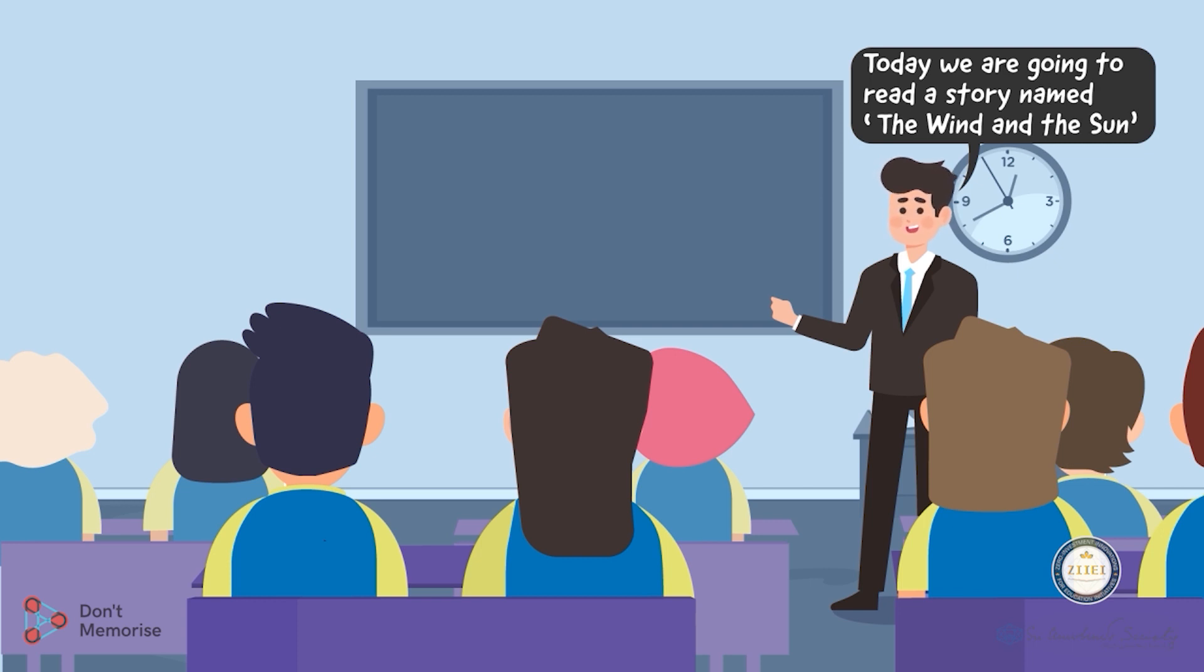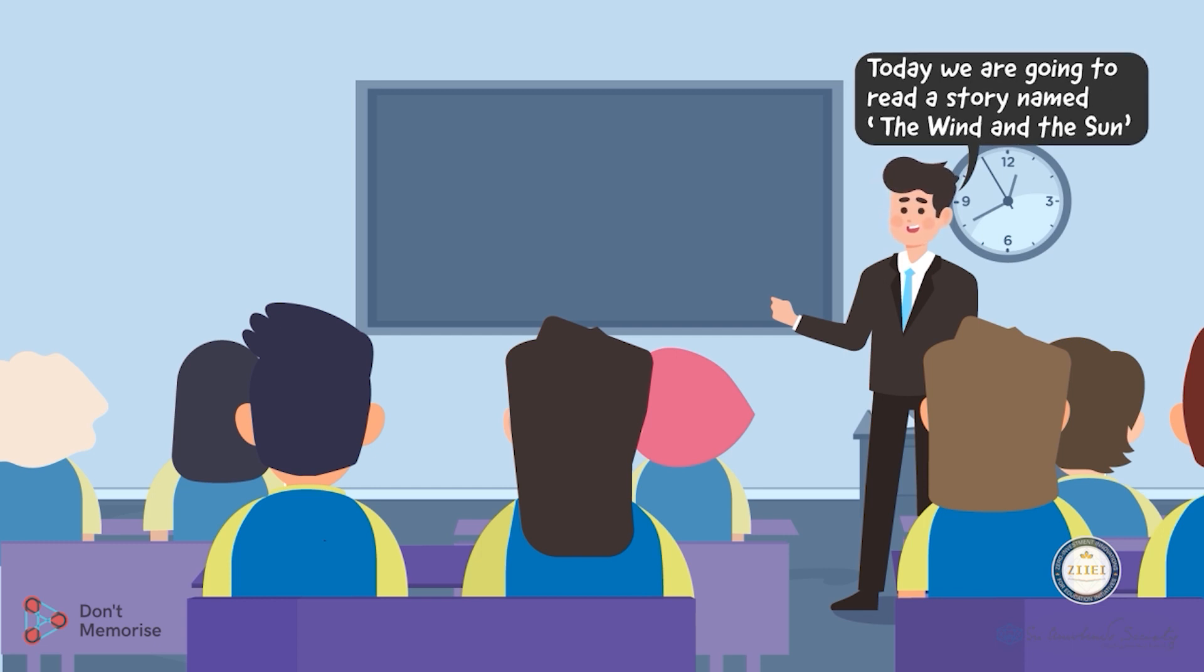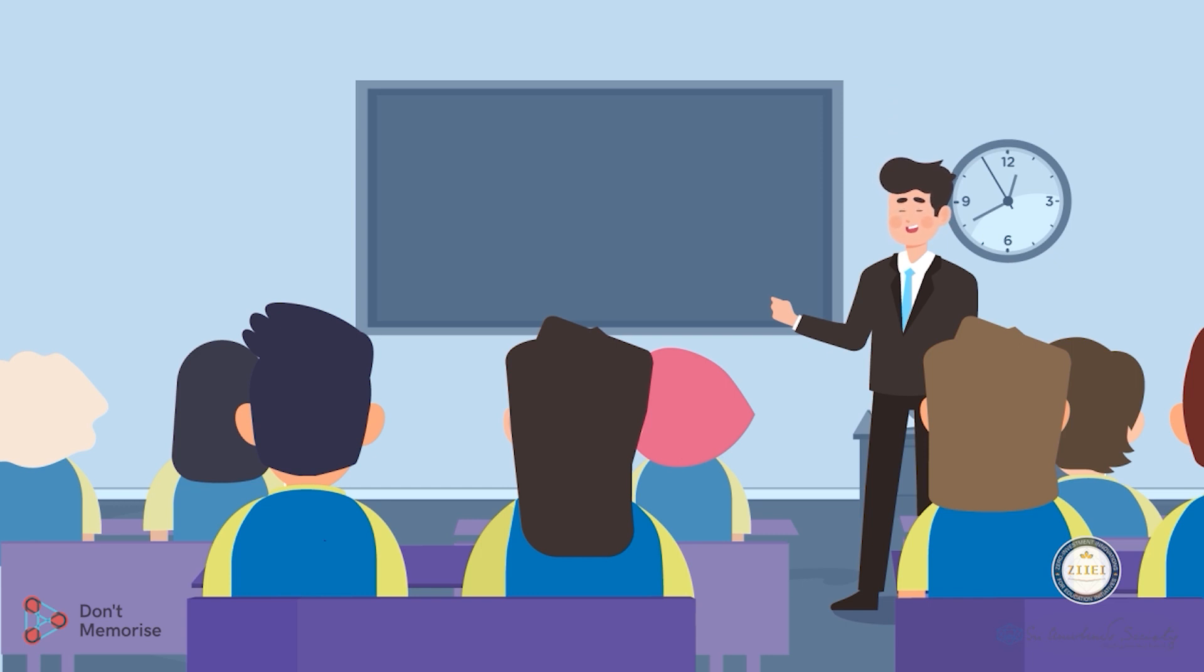Conclude the activity by telling the students that today we're going to read a story named The Wind and the Sun. Wow, we introduced the name of the lesson too! Wasn't that easy? Let's conclude our first session here. In the next session, we will take up explaining the concepts associated with the lesson.